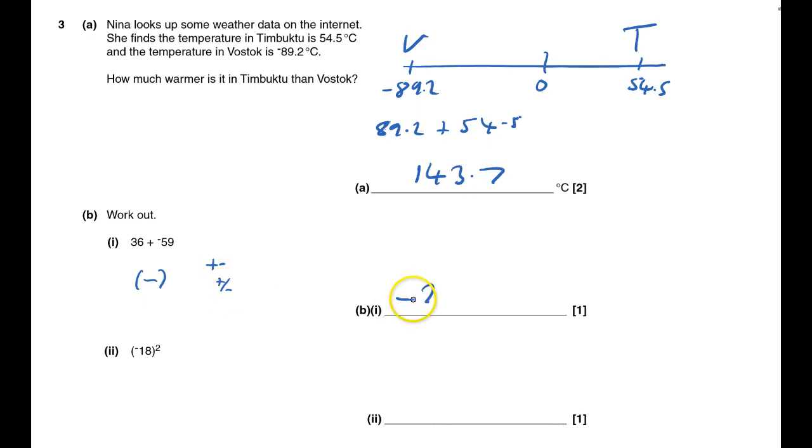Anyway, the answer is minus 23. Then again here, put it into brackets - you've got the whole of minus 18, so it's minus 18 times minus 18.